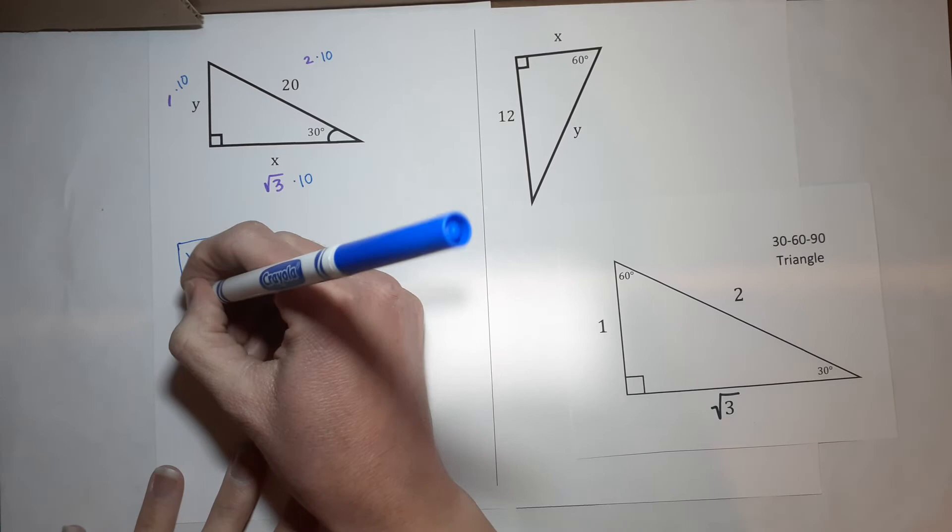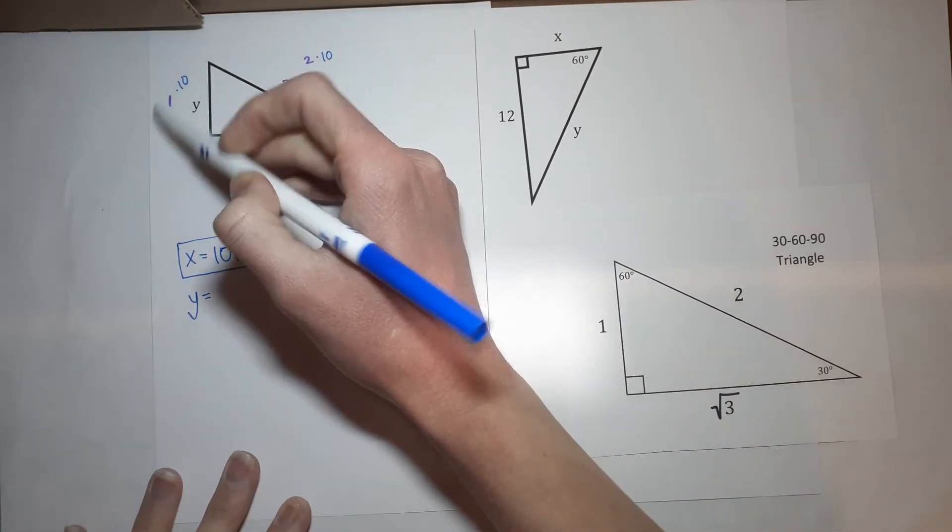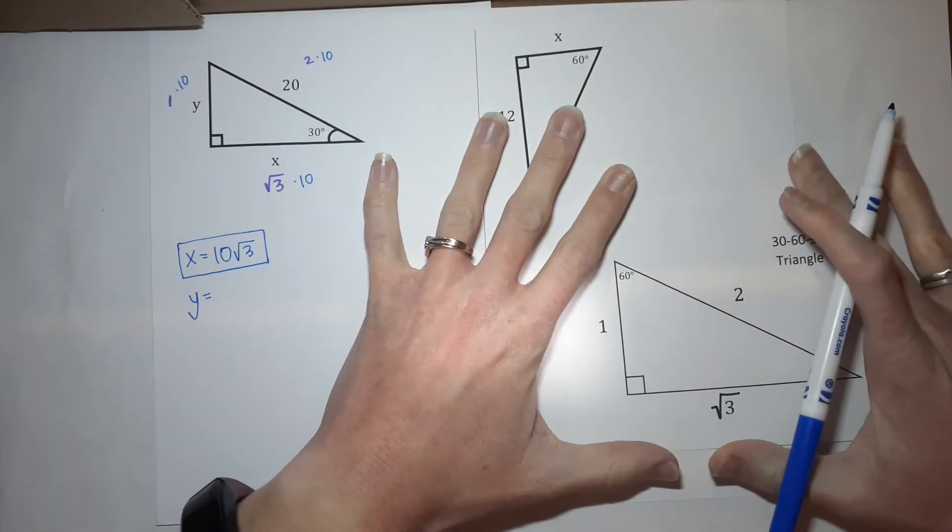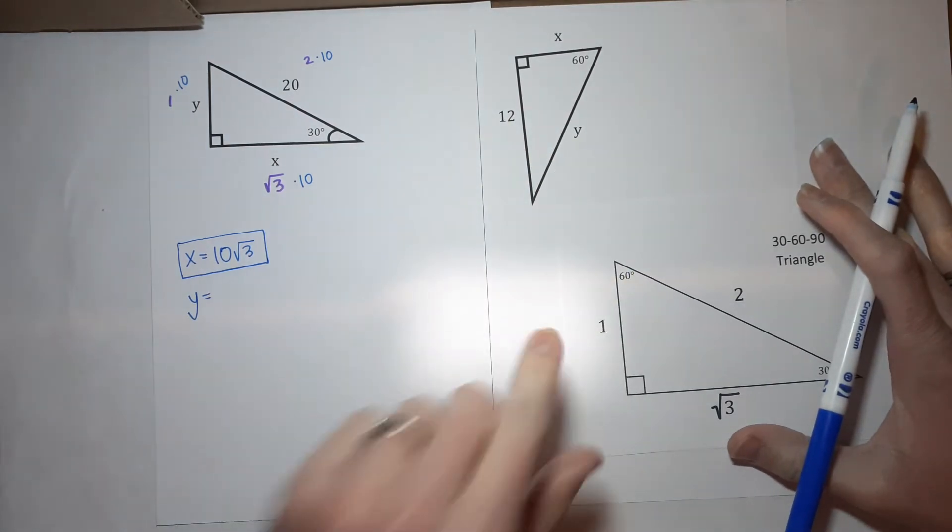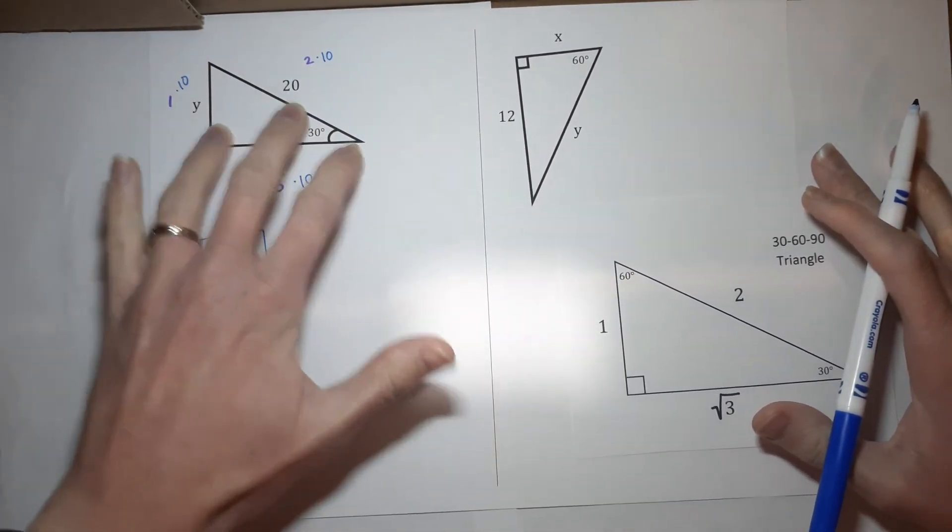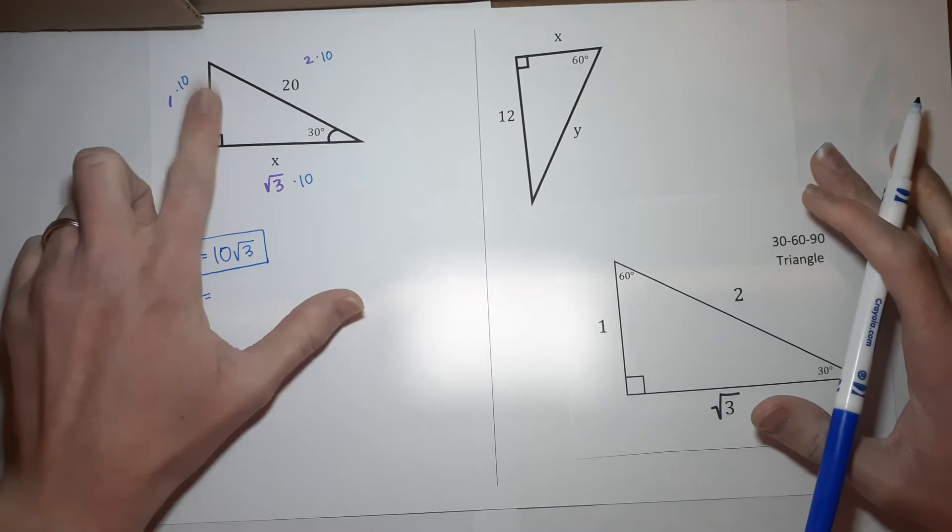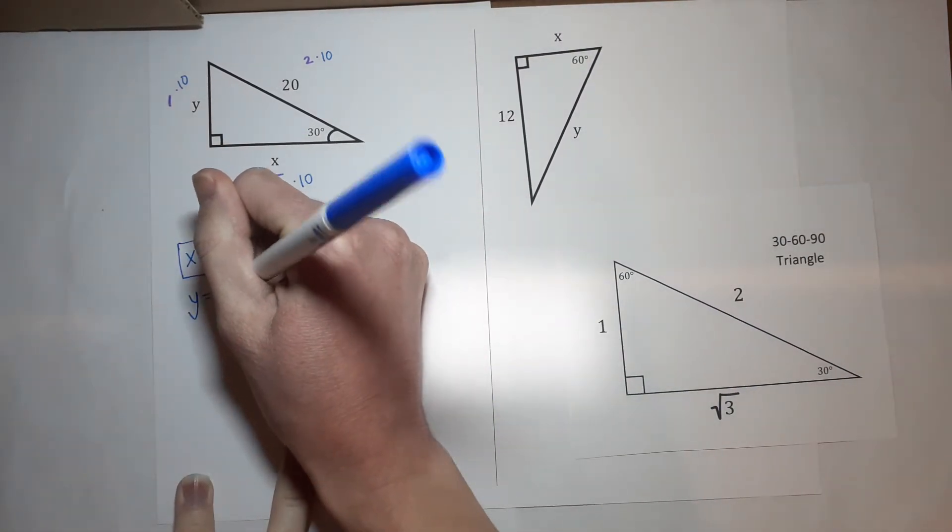What is Y? You're like, hurrying it to Y, lady. Y on my most simplified one is 1, but we figured out this one is 10 times bigger. So, 1 times 10 gives me 10. So, Y is 10.